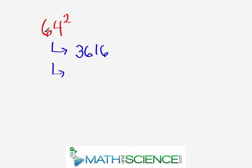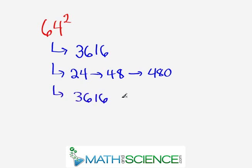Next we take 6 times 4, multiply these digits together, giving us 24. Then we double that to 48, then we put a zero, 480. And then finally, we just add them together. 3616 plus 480.